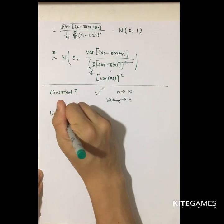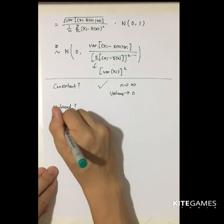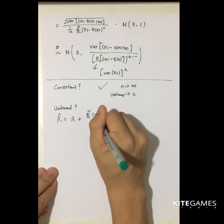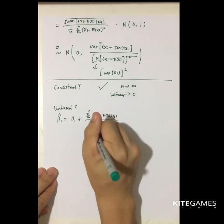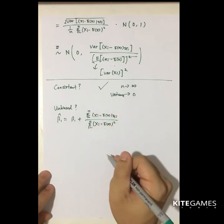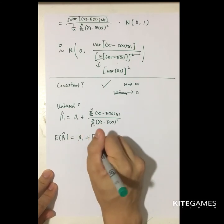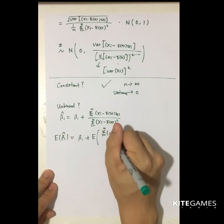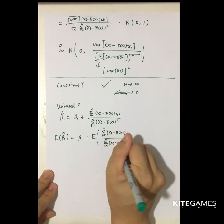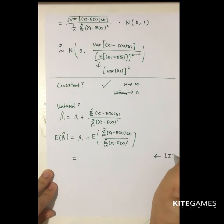How about unbiasedness? Is beta 1 hat unbiased? Yes. We know that beta 1 hat has the expression of beta 1 plus a second term. If we put an expected value here, the expected value of the constant beta 1 is still beta 1. For the second term, putting an expected value — we will apply the law of iterated expectations again.